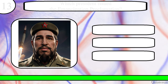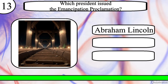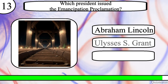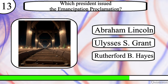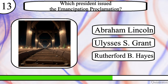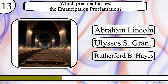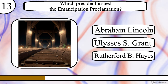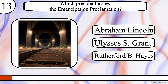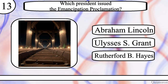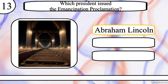Question 13. Which President issued the Emancipation Proclamation? Abraham Lincoln, Ulysses S. Grant or Rutherford B. Hayes? The correct answer is Abraham Lincoln.